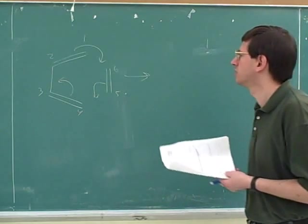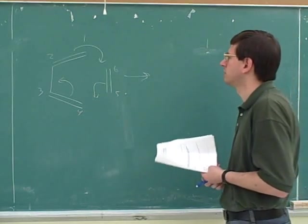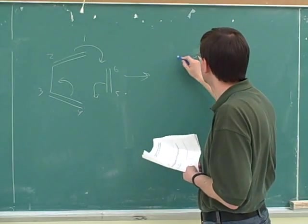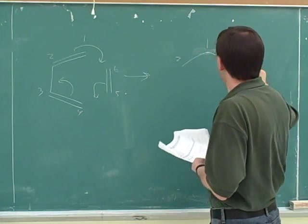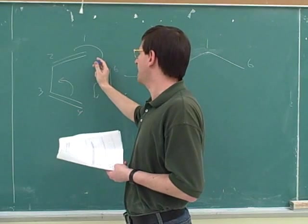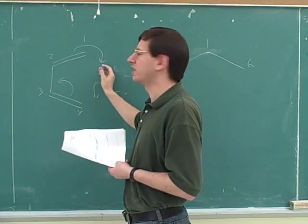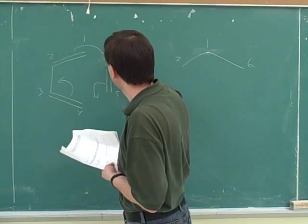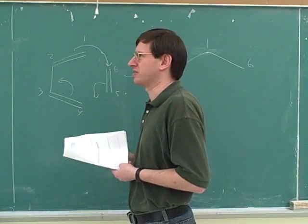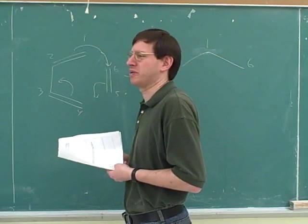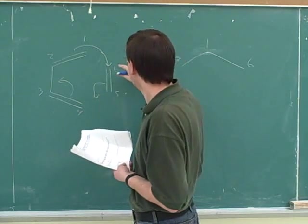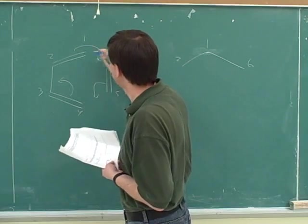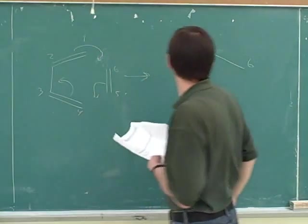Who should the number one be attached to? Two and six. So this indicates we're forming a bond between the one and the six. Good. You could also have written that like this — it depends on your organic chemistry software where the head of the arrow goes. But in this case, this still meant forming a bond between the one and the six.